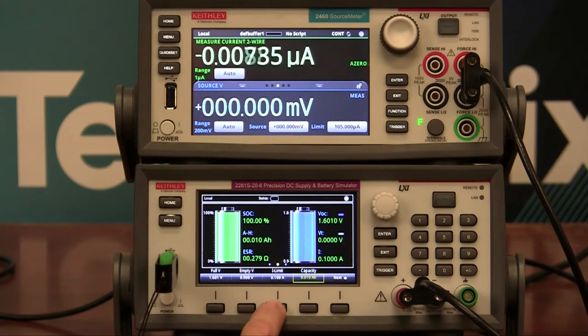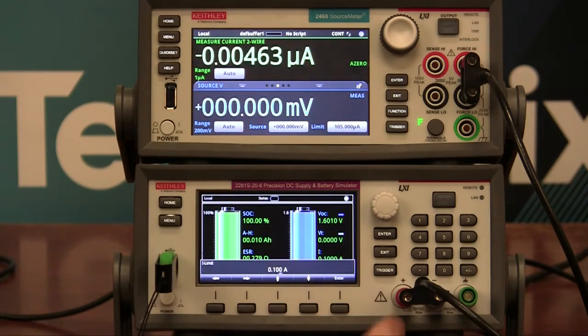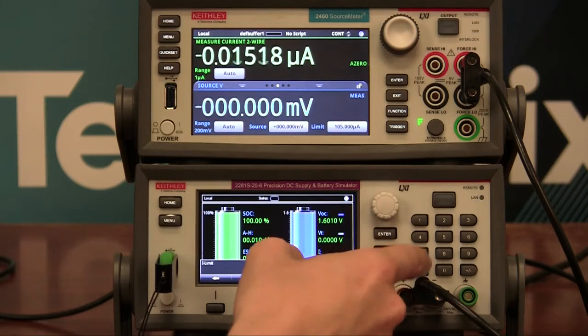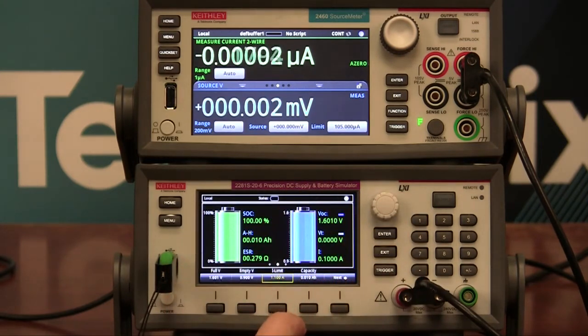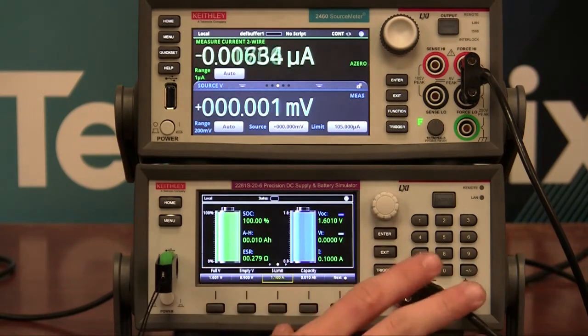Because we're discharging an amp, we need to set the I limit to be greater than an amp so that the 2281 doesn't go into current limit mode. So into here, change this to 1.1 amps. Press Enter. Now this is ready to go.